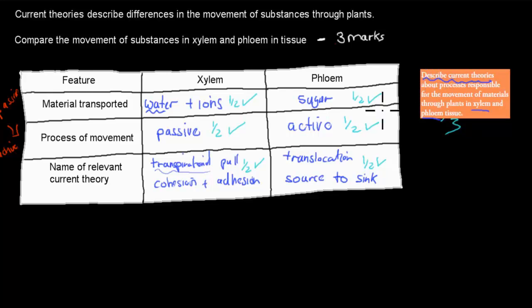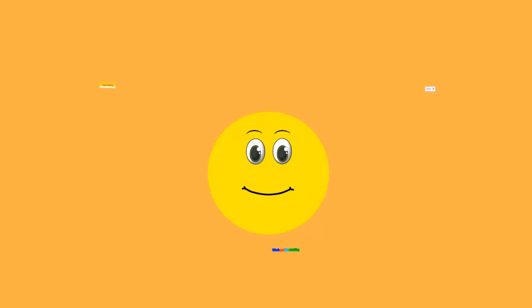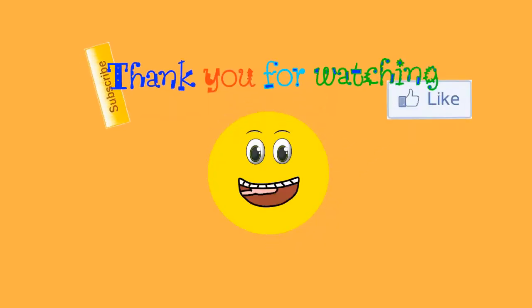We also have to be able to describe them, and that was the whole passive movement, active movement, source to sink, cohesion, adhesion—that was all part of describing the current theories. And the name of it was transpirational pull for xylem and translocation for phloem. So I hope that was useful. Thank you for watching.